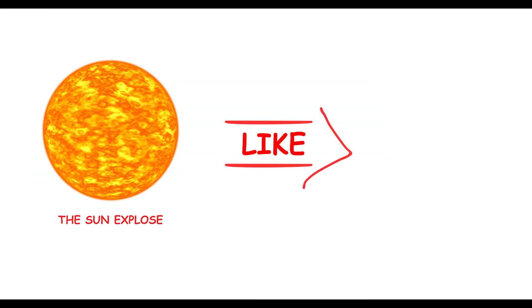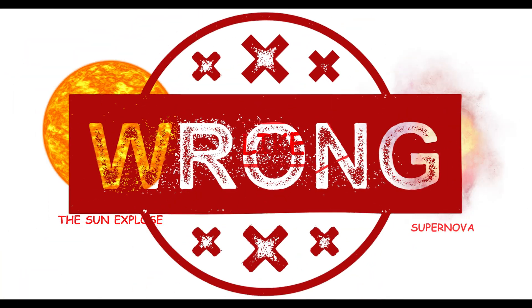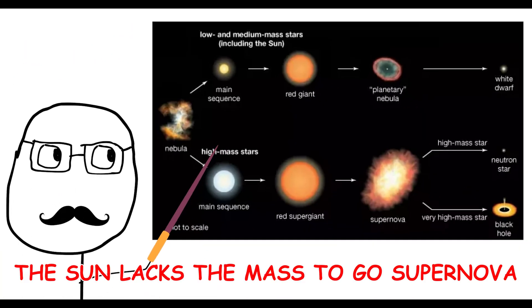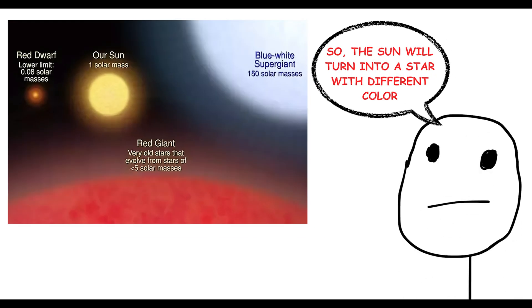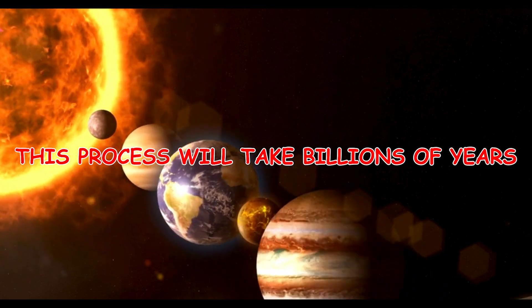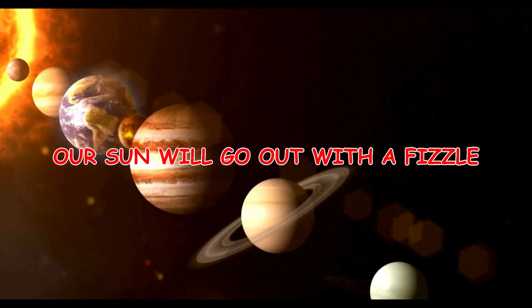Think the sun will explode as a supernova? Not true. The sun lacks the mass to go supernova. Instead, it will become a red giant and then a white dwarf. This process will take billions of years. So our sun will go out with a fizzle, not a bang.